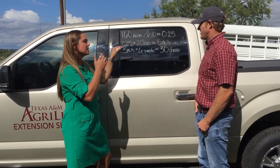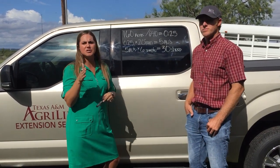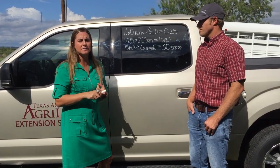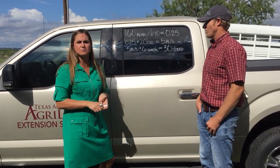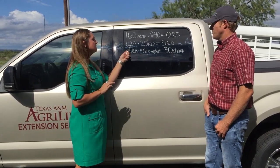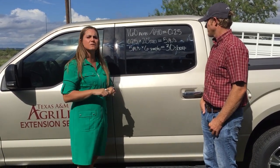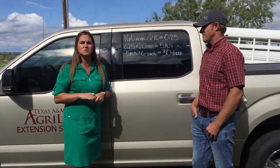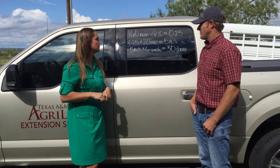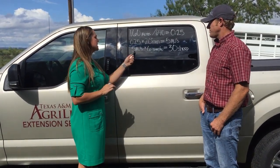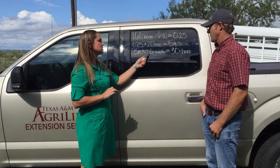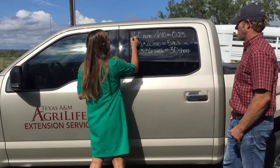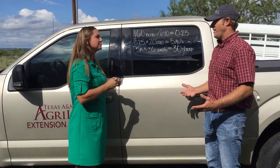We'll take 0.25 and multiply it by your average annual rainfall. For the Concho Valley, we estimated about 20 inches. You definitely don't want to use a dry year or an exceptionally wet year — focus on your average rainfall. So 0.25 times 20 inches of rain will give you approximately 5 animal units. That 5 animal units is in 1,000 pounds — so 1,000 pounds for a cow example. We're going to convert that over to sheep: take the 5 AUs, multiply it by 6, and that gives us approximately 30 sheep for that 160 acres.